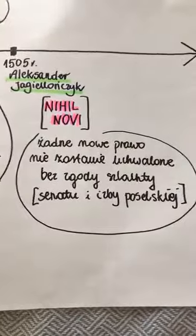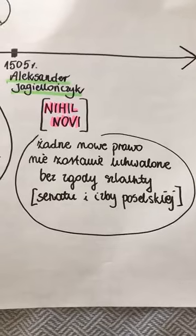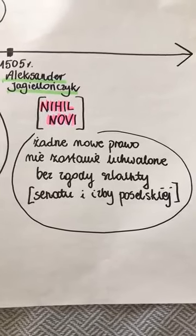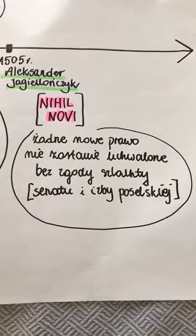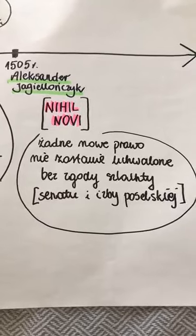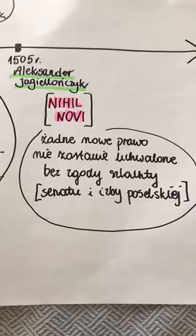I ostatni, najważniejszy przywilej – konstytucja nihil novi, o której mówiliśmy na lekcjach: żadne nowe prawo nie zostanie uchwalone bez zgody szlachty. Nihil novi po łacinie znaczy nic nowego – bez zgody szlachty nie zostanie ustanowione. To jest najważniejsze, bo przechodzimy do fundamentu demokracji szlacheckiej, z którego będzie słynąć Polska na całą Europę – czyli Sejmu. Gdzie się szlachta zbierała, jak się zbierała i jak podejmowała decyzje – to teraz pokażę.